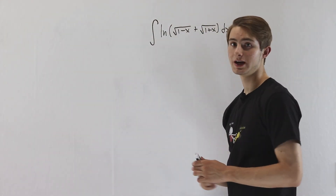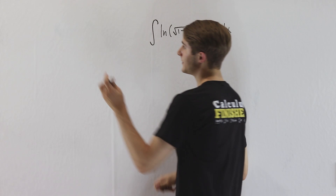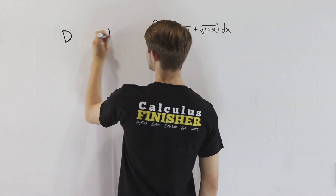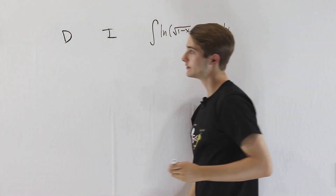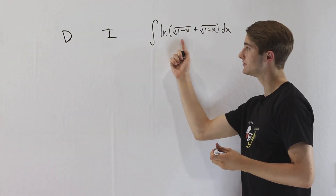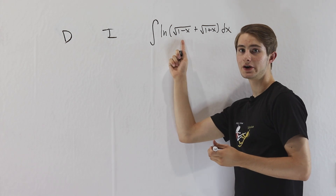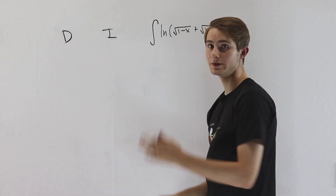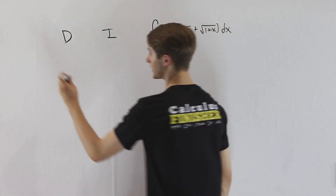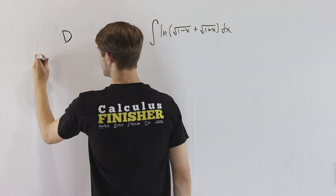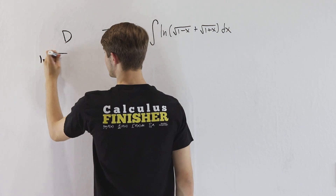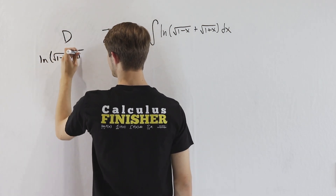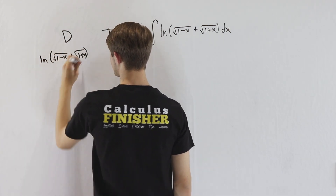Let's see what happens if we try that out. We need to figure out what we want to differentiate and what we want to integrate. We want to differentiate our integrand so that we can get rid of that natural log. So we'll differentiate the natural log of the square root of 1 minus x plus the square root of 1 plus x.